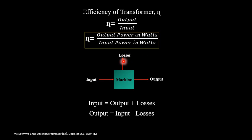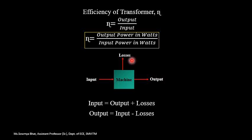How can we express the input-output and loss relationship? One easy way to remember the equation is, just like Kirchhoff's current law — where the sum of current entering a node equals the sum of current leaving the node — I can apply the same concept here. The input is applied into the machine, whereas the output is obtained along with losses. So in general, input power equals output power plus losses. From this, output is nothing but input minus losses.